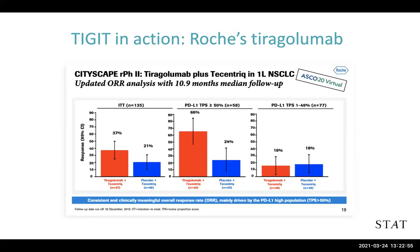This study was done in patients with newly diagnosed first-line non-small cell lung cancer. Patients were randomized to receive tiragolumab plus Tecentriq — Roche's PD-L1 inhibitor — or Tecentriq alone. Looking at the ITT population on the far left, the response rate was 37% in the combination arm versus 21% in the control arm of Tecentriq alone — a numerical difference in favor of the combination, but maybe not as large a difference as one had hoped to see.